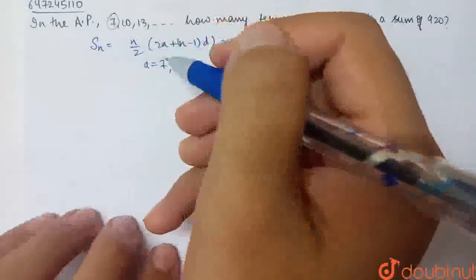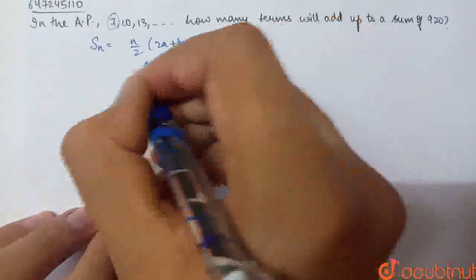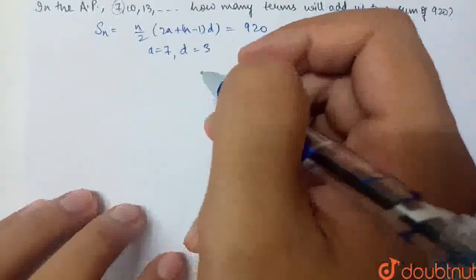13 minus 10 is 3. It's the same. Common difference will be the same in AP. So a and d values have come. Now we will start to solve the problem.